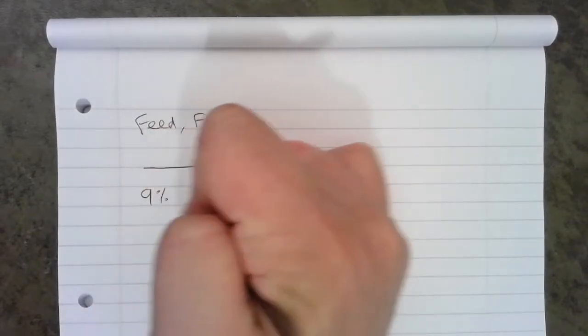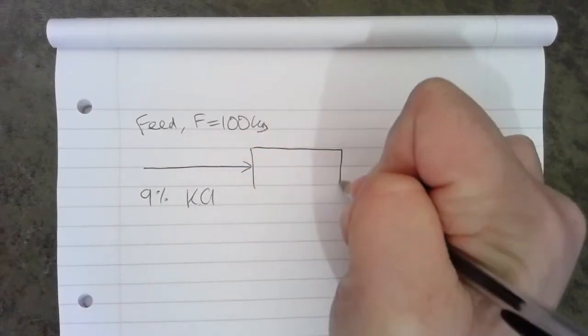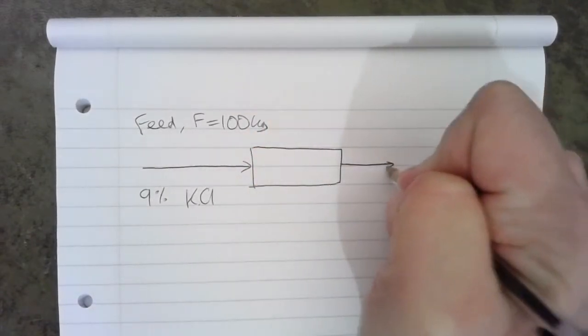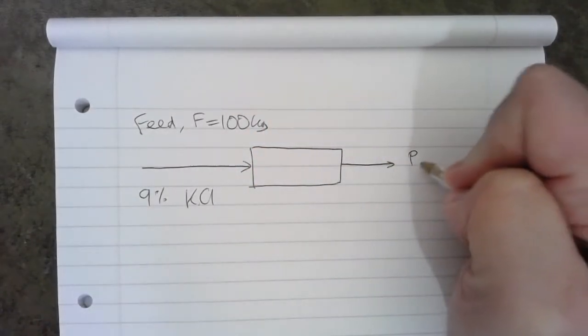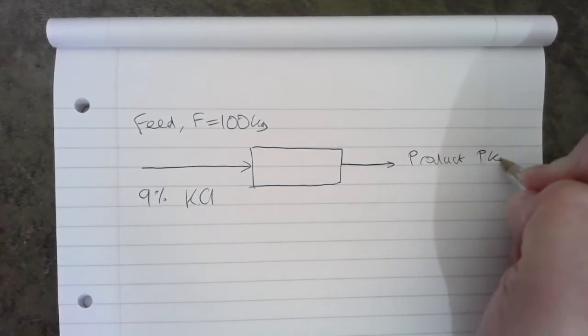We know that is 9% KCl, and that's going into an evaporator which is producing a product, which we'll say is P kilograms.